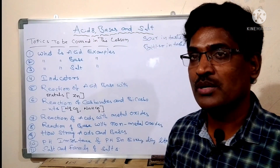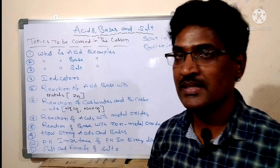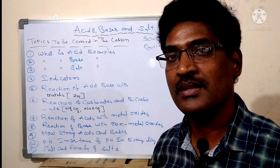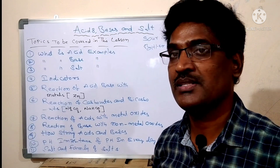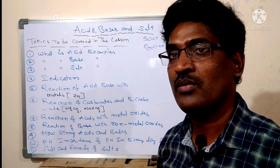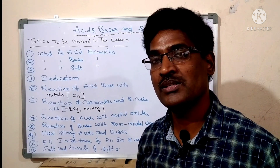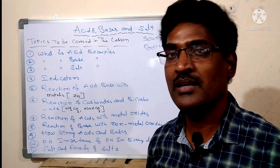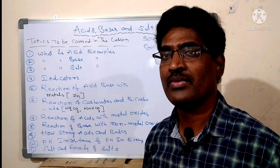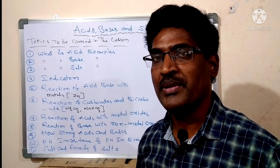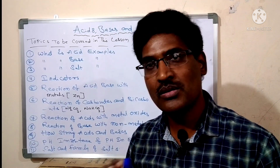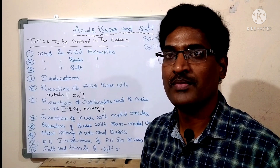Topics to be covered in this chapter: What is acid? What is base? What is salt? What is indicator? What are the reactions that take place with acid and metals? Reactions of acids with bases, carbonates and bicarbonates, and reactions of non-metallic oxides. And what is pH? What are the salts and what are the families of salts? These are the topics we will cover in this chapter.